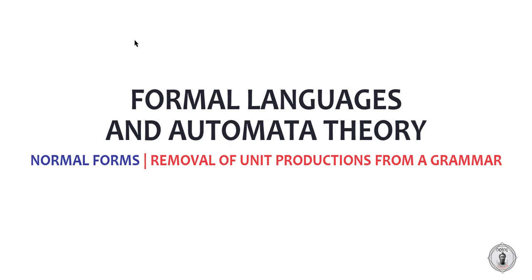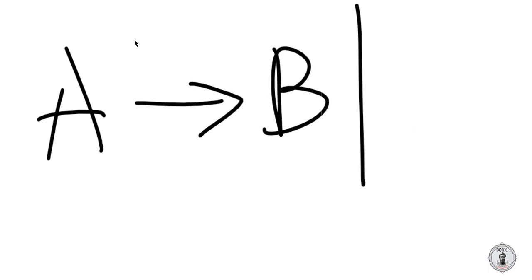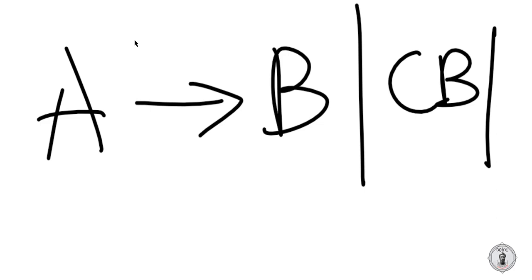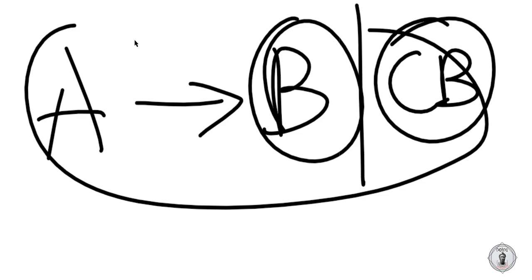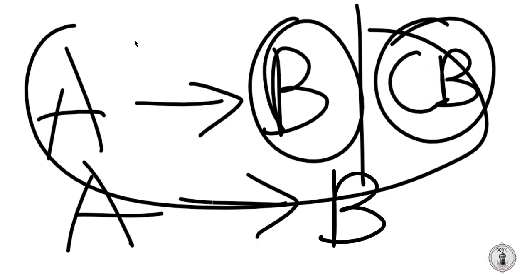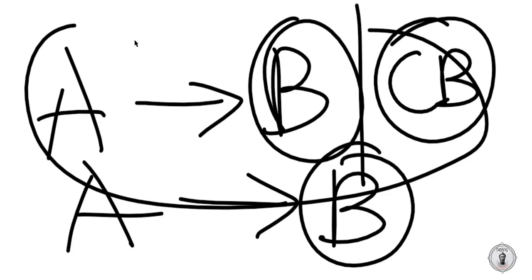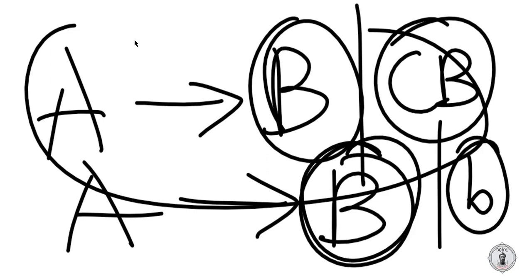A rule is said to be a unit production — for instance, if we have a rule A producing B, that is a unit production because there is a single non-terminal present in the production. A unit is said to be a non-terminal variable. So if we have a variable such that it produces a non-terminal variable B and it is alone, then it is said to be a unit production. This is not a unit production if it contains a terminal variable paired with another symbol.